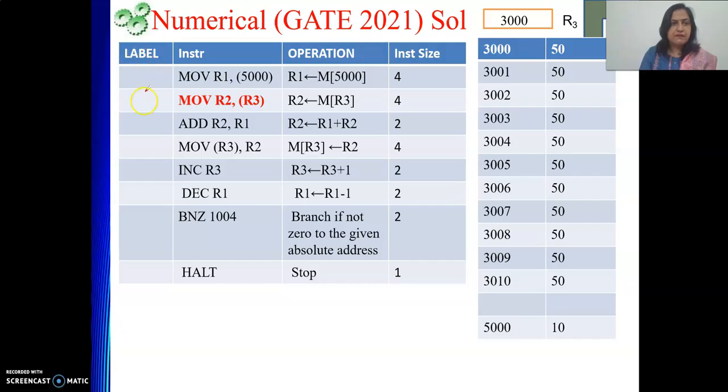So whatever data they have given that I have written here. Register R3 is holding value 3000 and 3000 to 3010 is holding 50, and 5000 is holding value 10. And the label I have just written, label means address of the instructions. So see move R1, within bracket 5000. Meaning of this instruction is that content of memory location 5000, content of MX where X is 5000 here, is moved to R1. And the size of this instruction is 4. So what I will do basically initially before doing the operations? See it is given that our program starts in memory location 1000. So address of the first instruction will be 1000.